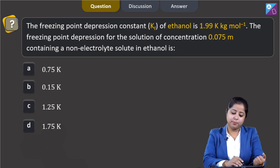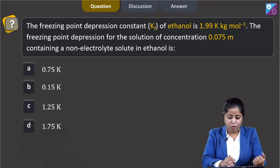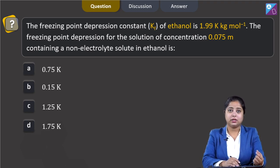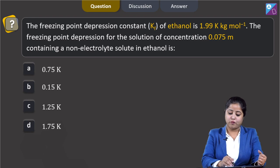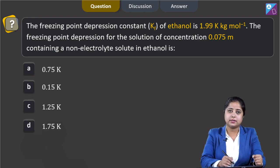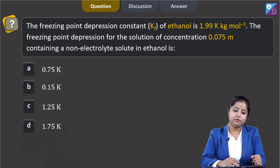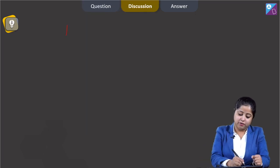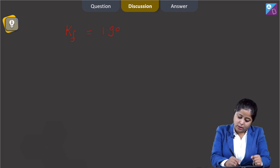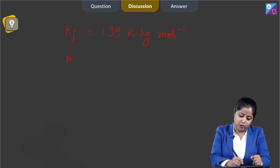Moving to the next question: the freezing point depression constant (Kf) of ethanol is 1.99 K·kg/mol. The freezing point depression (ΔTf) for a solution of concentration 0.075 molal containing a non-electrolyte solute in ethanol is? The options are 0.75 K, 0.15 K, 1.25 K, and 1.75 K. We are given Kf = 1.99 K·kg/mol and molality = 0.075 molal.